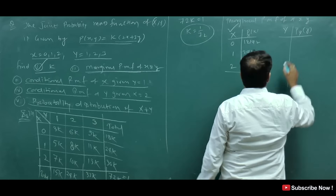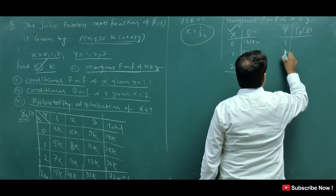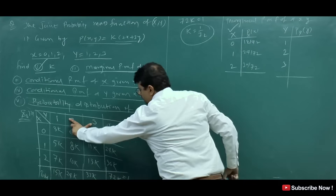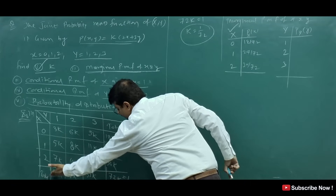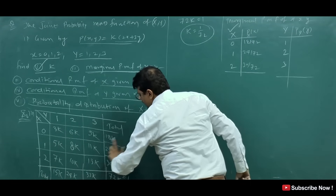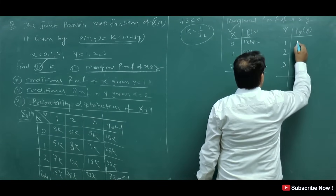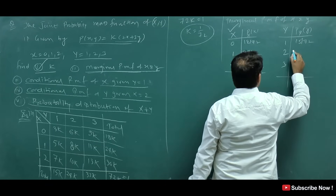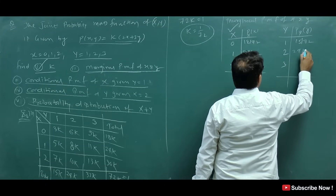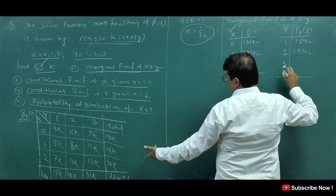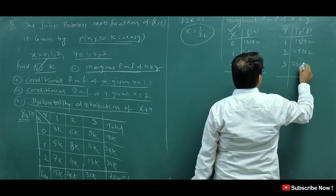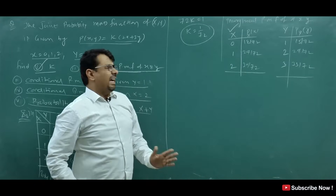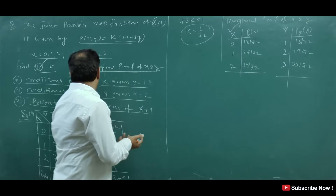Now let's talk about the marginal PMF of Y. Y values are 1, 2, and 3. We write the column totals and put K equals 1 by 72. So: P(Y=1) = 15 by 72, P(Y=2) = 24 by 72, and P(Y=3) = 33 by 72. This is how we find the marginal PMF of X and Y.